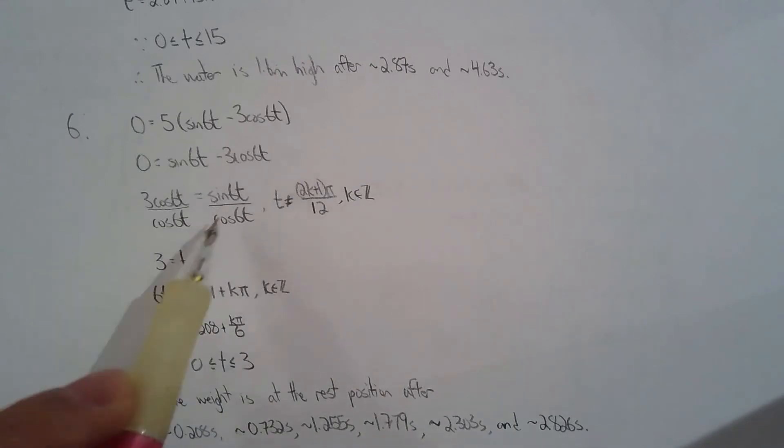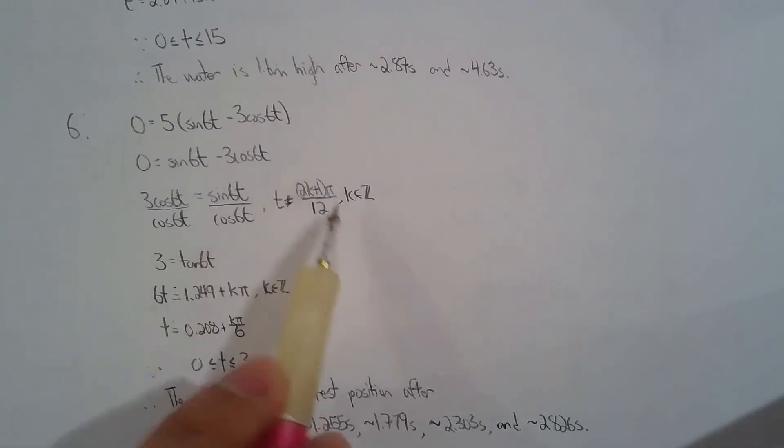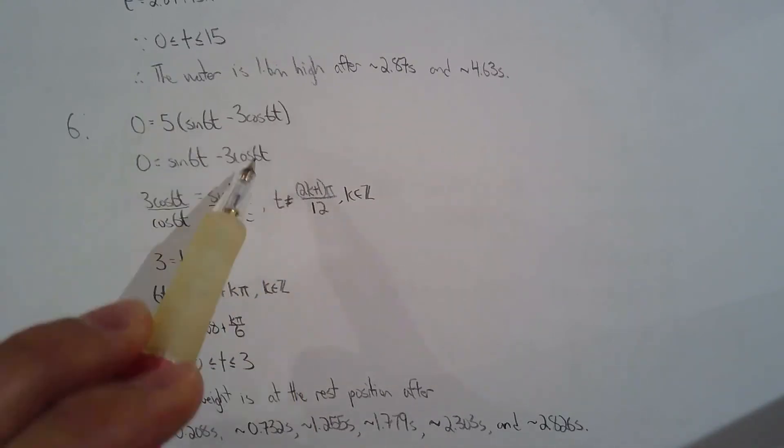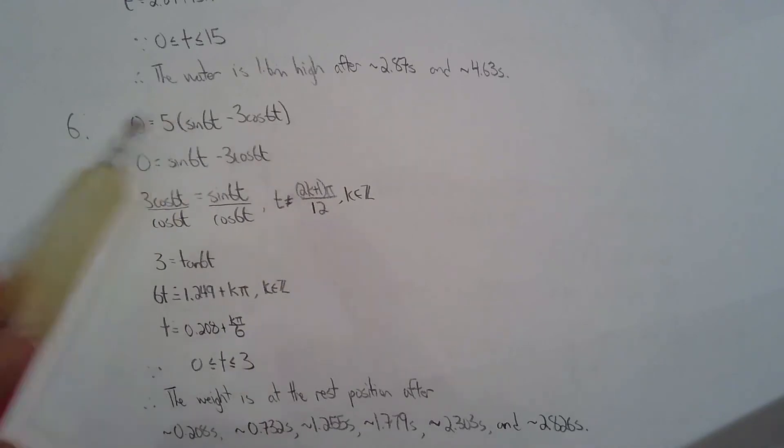Be careful, divide both sides by cos 6t. So state the restrictions because you have to make sure these solutions are not matching up with the restrictions. And they don't, so we're good to go. We are allowed to divide both sides by cos 6t.